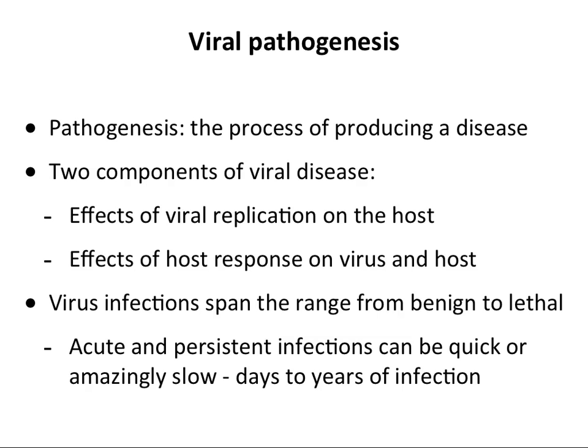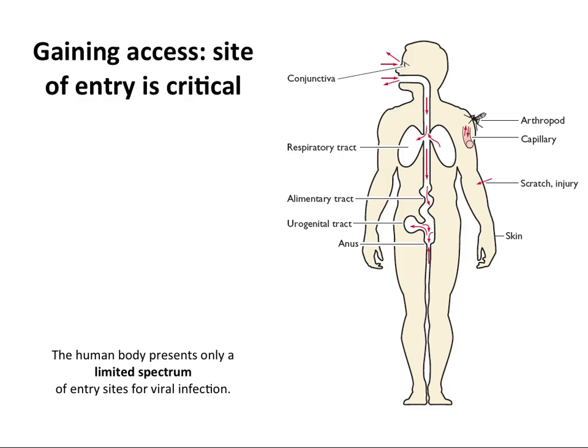Some infections are very quick — we call those acute infections, which can be just a few days in length. Others can be persistent, occurring over the course of years — up to ten years for AIDS. So it's very quick to very slow. The first step is gaining access to you or whatever animal is being infected. There are limited sites that can be infected. If you think of your bodies as complicated, in fact there are not many ways that viruses can get in: skin, various mucosal surfaces, the conjunctiva, the respiratory and alimentary tracts, and your genital tracts.